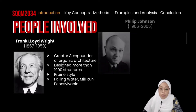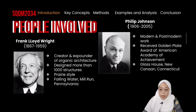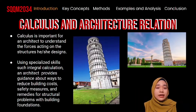Next, we also have Philip Johnson. He was born in 1906 and died in 2005. He is known for his work in the modern and post-modern world. He also received the Golden Plate Award of the American Academy of Achievement. He is the person who built the Glass House in New Canaan, Connecticut.